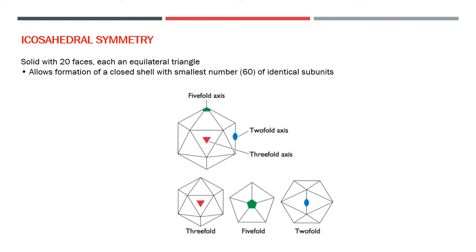To remember this for drawing diagrams: the 5-fold axis is the top view, the 3-fold axis is the front view, and the 2-fold axis is the side view. This should help when drawing your diagram. Icosahedral symmetry allows the formation of a closed shell with the smallest number of identical subunits — that smallest number is 60 subunits.